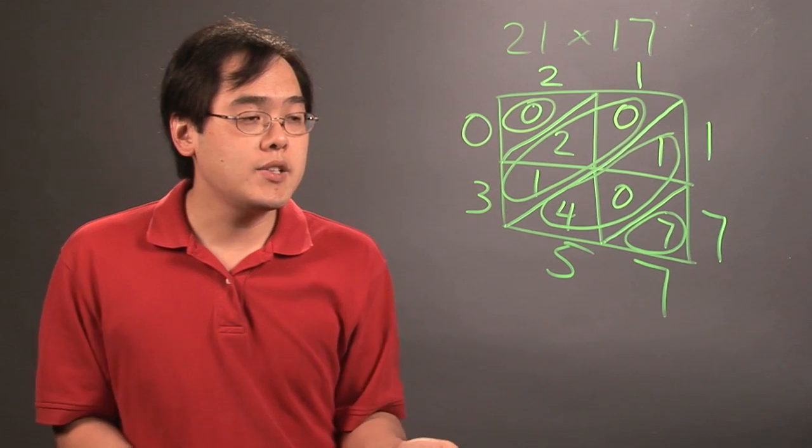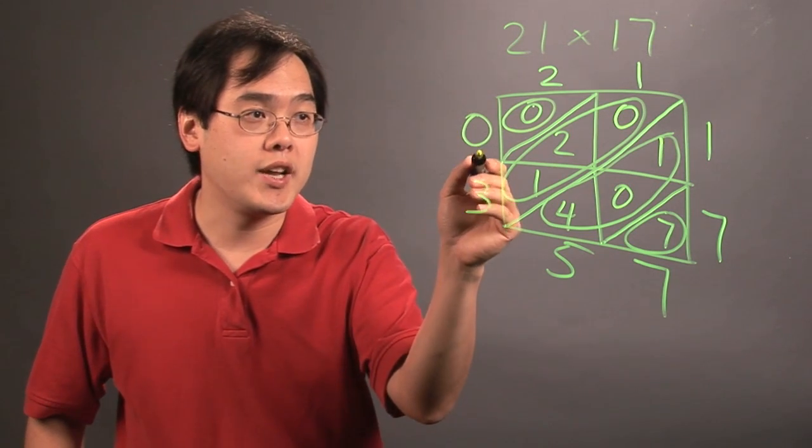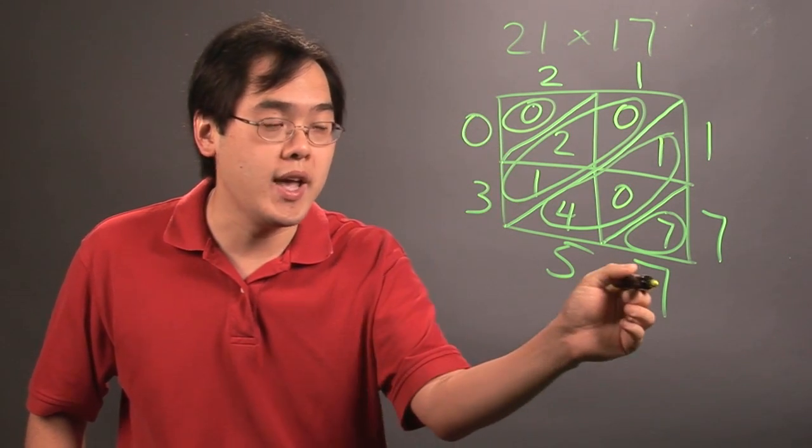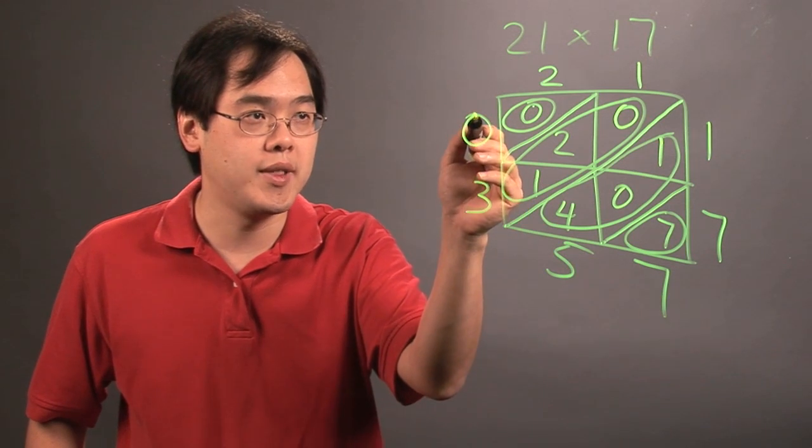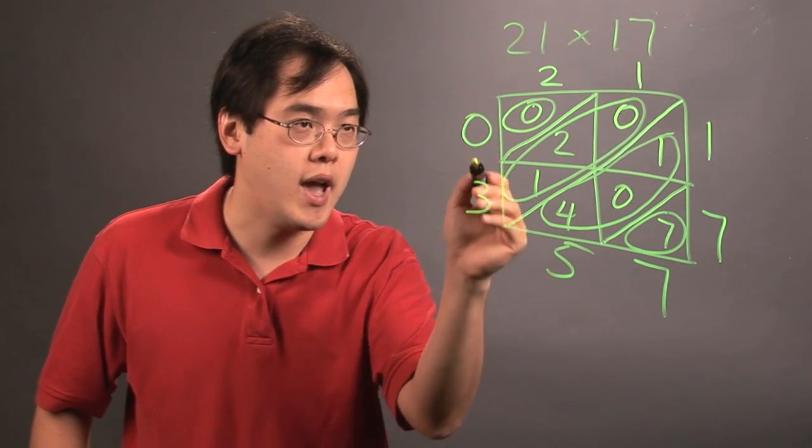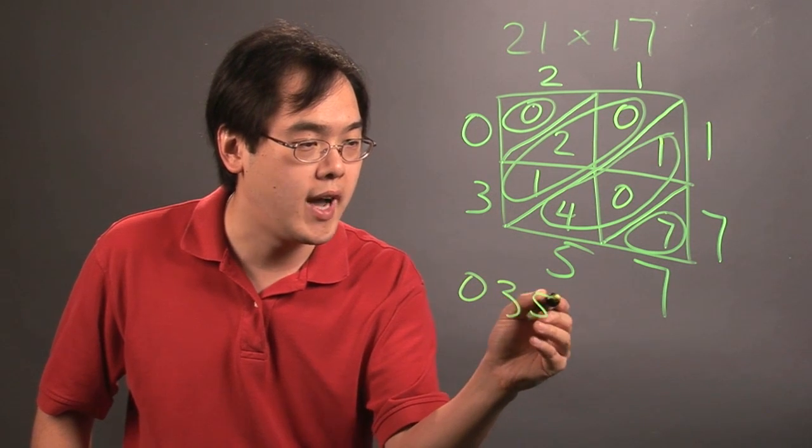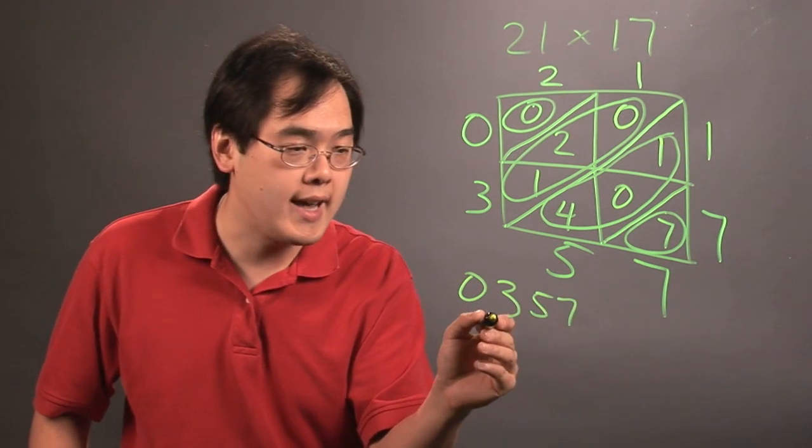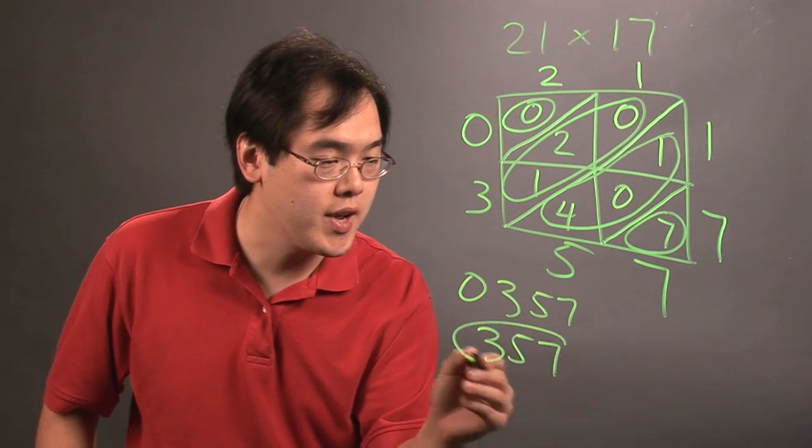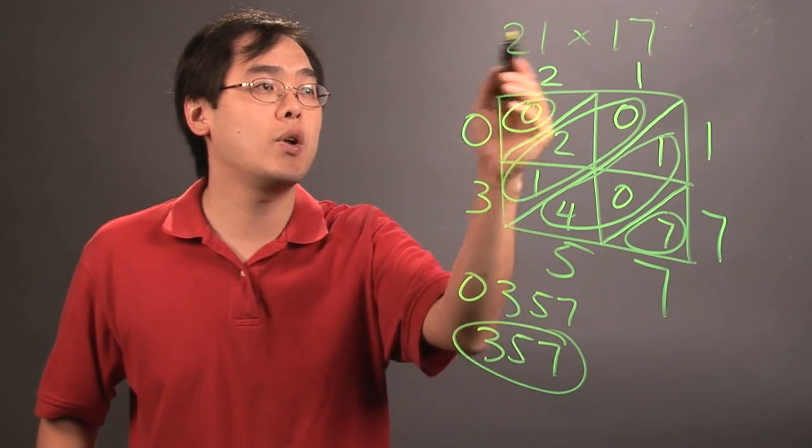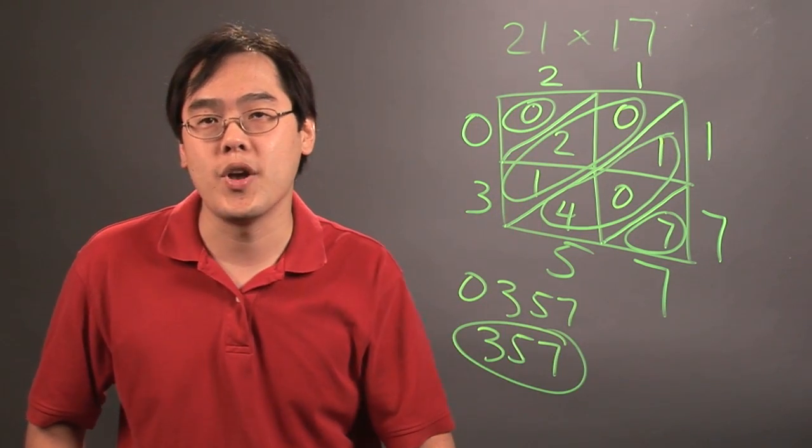So basically, in terms of the final answer, you actually look at it this way. You start here and then you end over here. So you start at this corner and then you have a little path going. And as you can tell, it's going to be zero, three, five, seven, which means that actually the final answer is 357. So, 21 times 17 is 357.